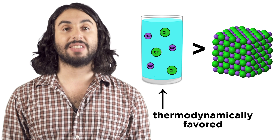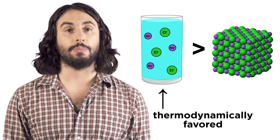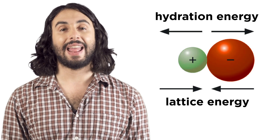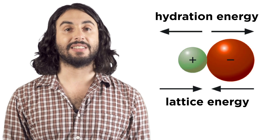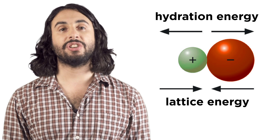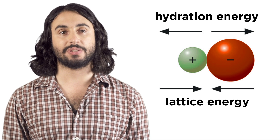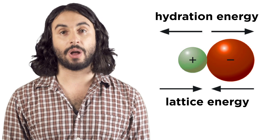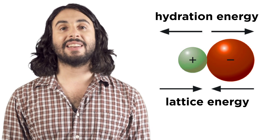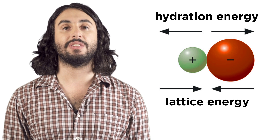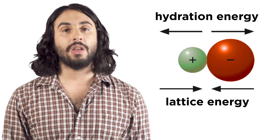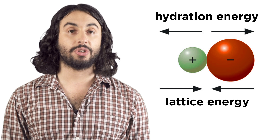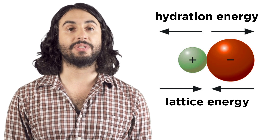If this is the case, the substance will likely be soluble. We have to compare two values for any ionic solid: the hydration energy and the lattice energy. The hydration energy is the energy that results when a network of ions maximize interactions with solvent particles. Lattice energy is the energy that holds the solid lattice together. Whichever one is greater will determine whether the substance dissolves or not.